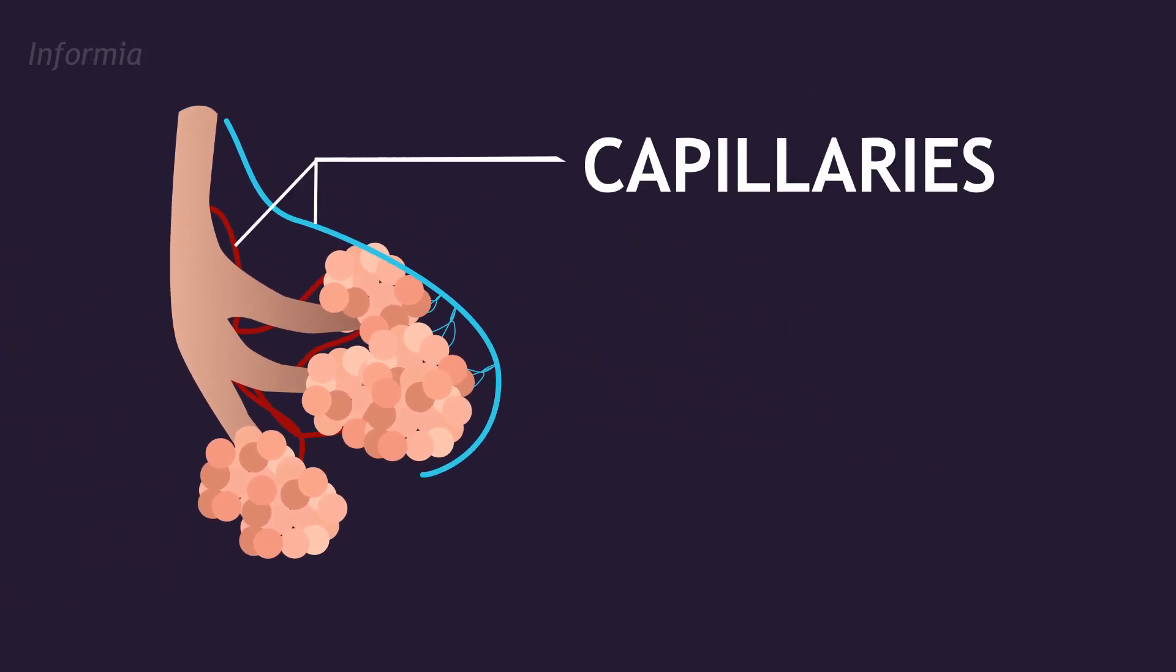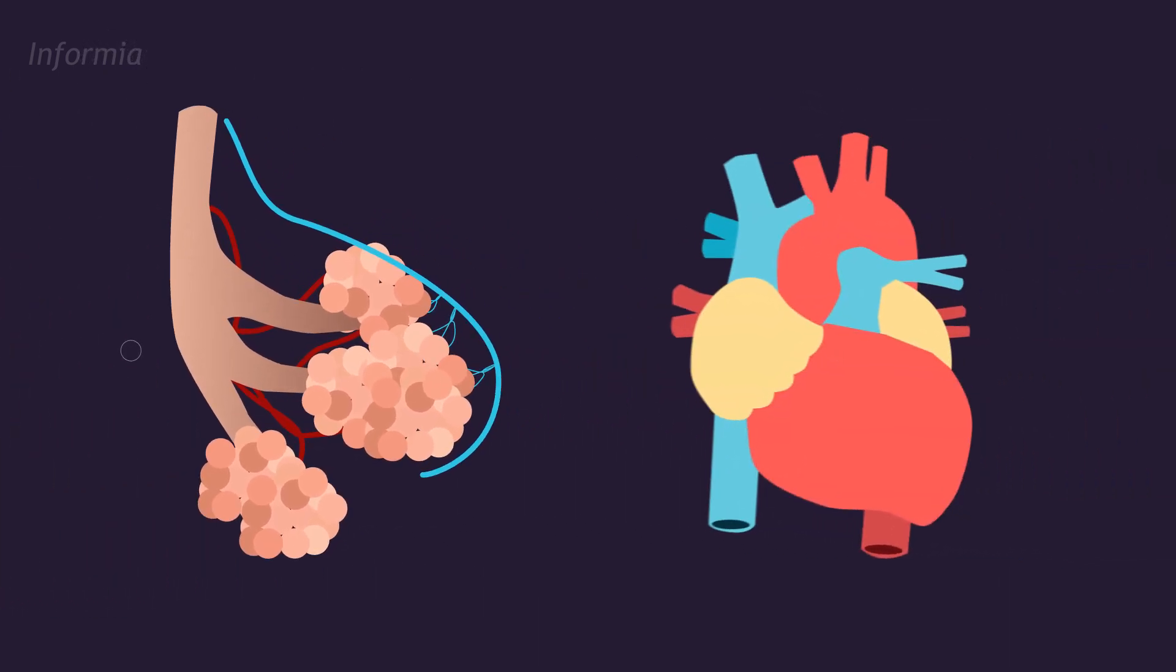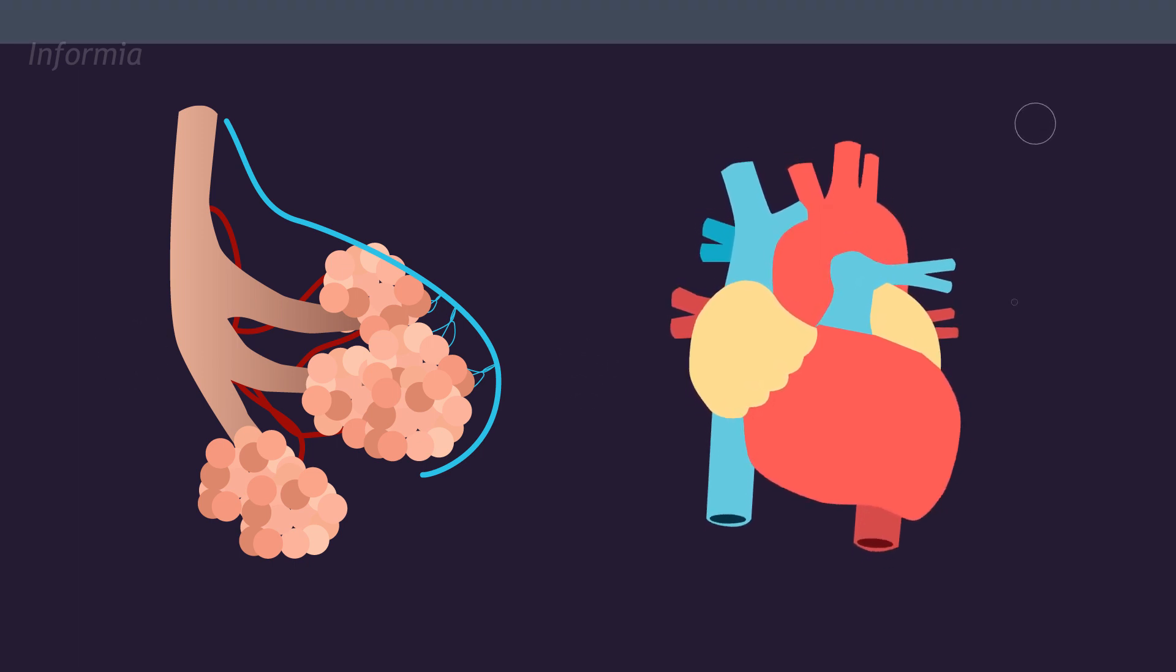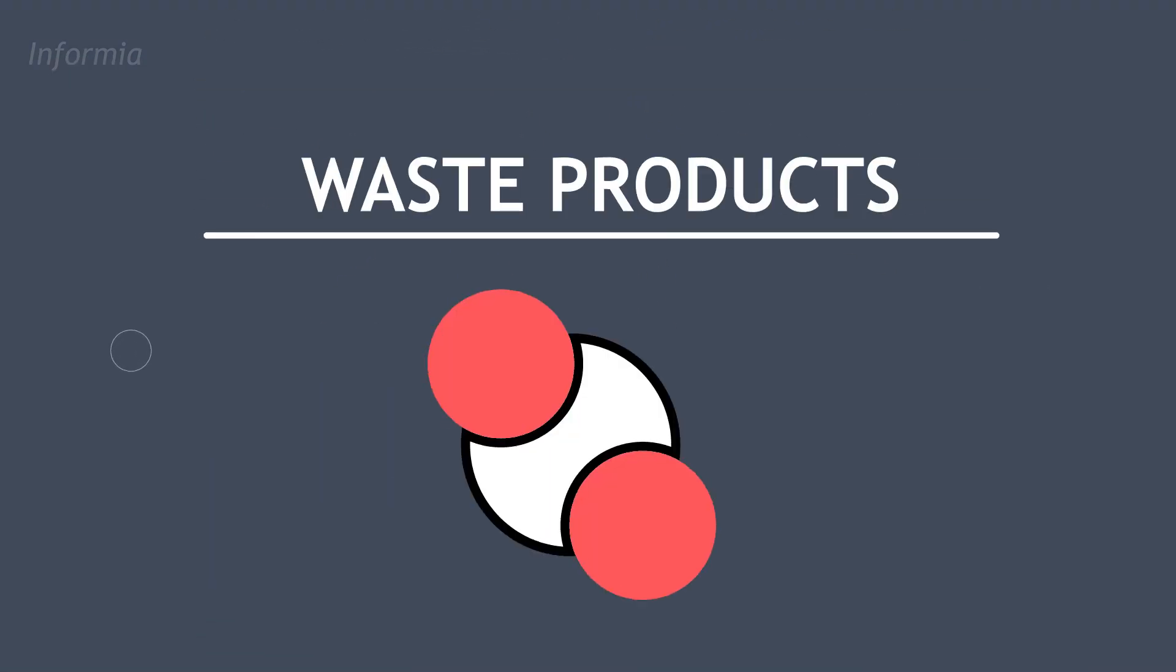Some of that oxygen passes through your capillaries or blood vessels and eventually reaches the heart. To reward us for providing the blood with oxygen, the capillaries give us their waste products like carbon dioxide.